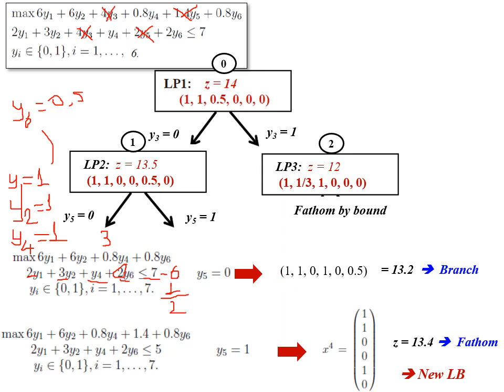The solution for node three is: y1=1, y2=1, y3=0 (fixed), y4=1, y5=0 (fixed), y6=0.5. The objective function value is 13.2. Making the decision: the incumbent is still 12, this value is larger than 12, so we cannot fathom due to bound. We cannot fathom due to infeasibility or solving either. We must branch — on y6, the fractional variable.